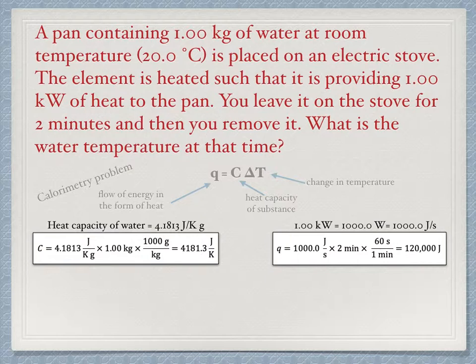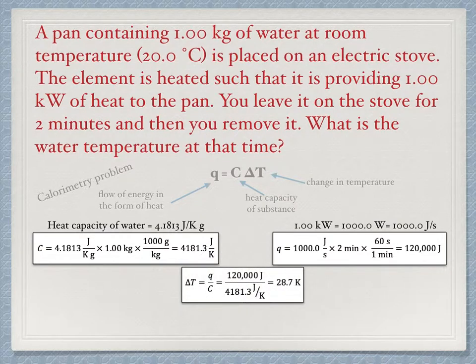So how hot does the water get after two minutes? We need to rearrange the calorimetry equation to solve for delta T, which is found by dividing Q by the heat capacity C. Again, note what the units are doing. 120,000 joules divided by 4,181.3 joules per Kelvin gives 28.7 Kelvin for the change in temperature.